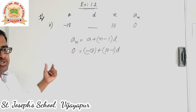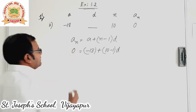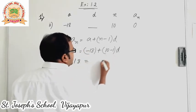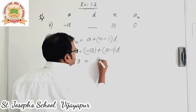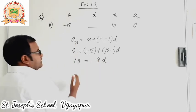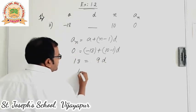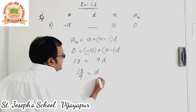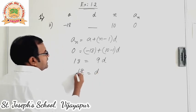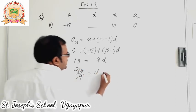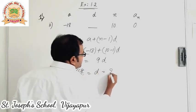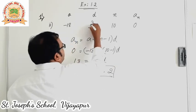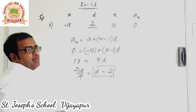Minus 18 comes to the other side and becomes plus 18, which is equal to 10 minus 1, which is 9d. 9 comes to the other side, so 18 by 9 is equal to d. So d value is 2. Hence we got the value of d. Let us fill it up: 2.